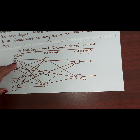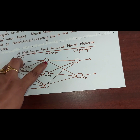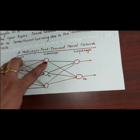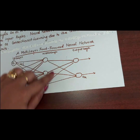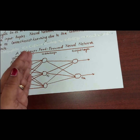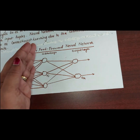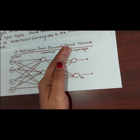The input passes through the input layer, is weighted, and is then fed to the second layer, which is the hidden layer. The output of the hidden layer is then put into another hidden layer if one exists, but if not, it is directly put into the output layer.